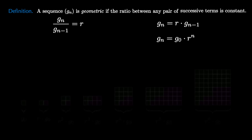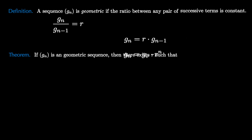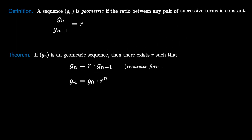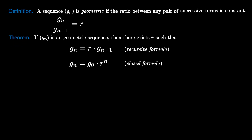Our pictorial representation suggests a theorem. If g_n is a geometric sequence, then there exists a constant value r such that g_n equals r times g_{n-1} (the recursive formula), and g_n equals g_0 times r to the n (the closed formula). Either of these formulas allow us to build the sequence forever, just knowing the first term and the common ratio r.